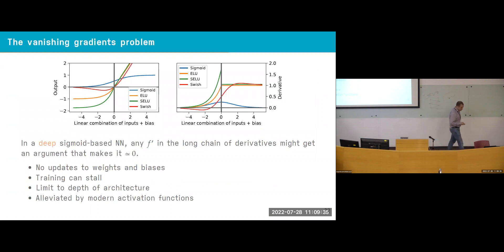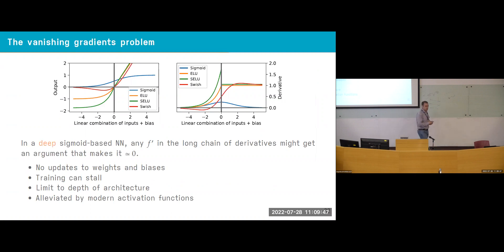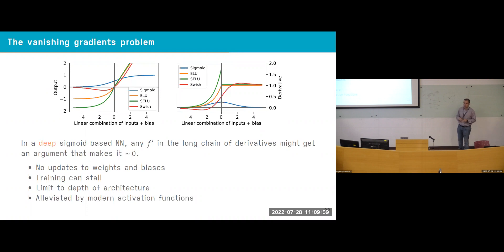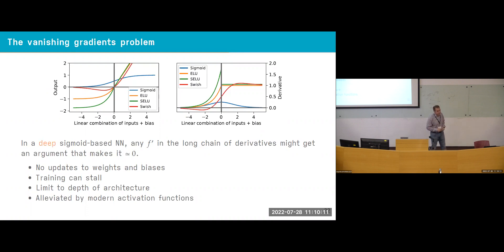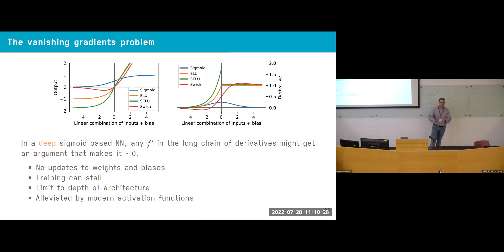Automatic differentiation also transforms phonon calculations. Phonons require diagonalizing the dynamical matrix — a Fourier transform of interatomic force constants. With automatic differentiation, using a Jacobian-vector product on top of a vector-Jacobian product, we can obtain the dynamical matrix directly without passing through intermediate steps, taking all phonons at a given Q-point efficiently. This brings the workflow much closer to density functional perturbation theory, blurring the lines between orbital-based DFT and classical potentials.